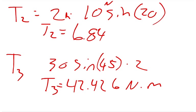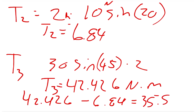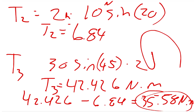then you have to realize that T1, again, was in the negative direction, so we can add these together, 42.426 plus the negative 6.84 equals roughly 35.58 newton meters. And it's a positive number, so it's going in the counter-clockwise direction. It's going in the counter-clockwise, let me redraw that counter-clockwise direction.